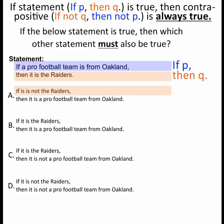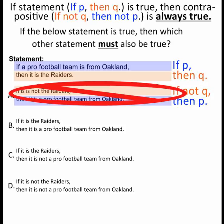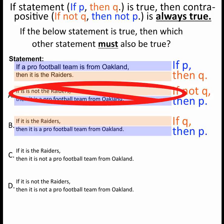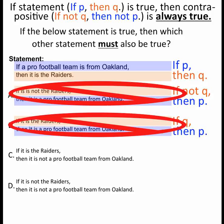The first option says: if it is not the Raiders — if not Q — then it is a pro football team from Oakland — then P. That's not the contrapositive; the contrapositive is if not Q then not P, so not that one. The next statement is if Q then P — again, not the contrapositive.